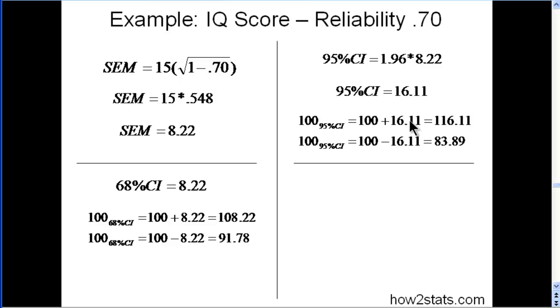And now if I use my plus and minus, 100 plus 16.11 equals 116.11 and 100 minus 16.11 is 83.89. So now the range in confidence has increased but we also want to capture with 95% confidence the person's true IQ score.